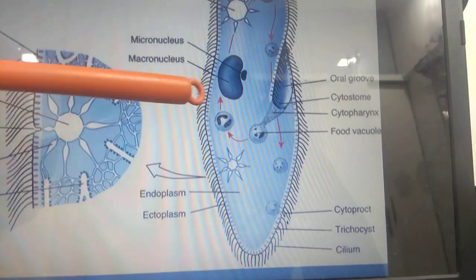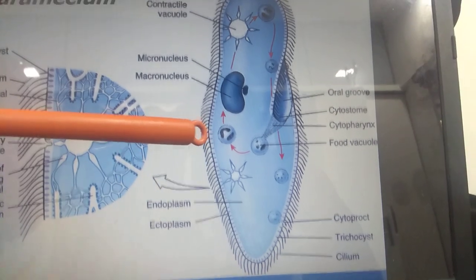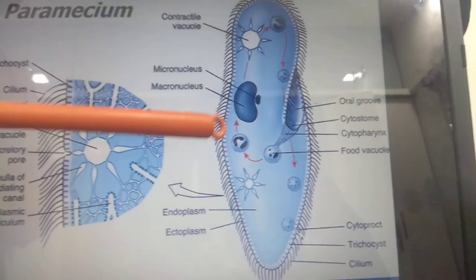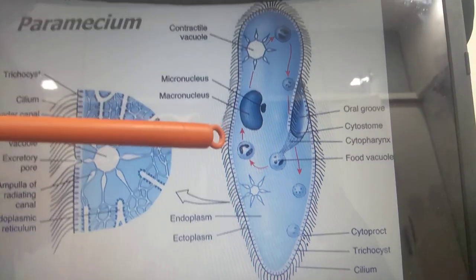The trichocyst is a carrot-like structure present in the pellicle that performs the function of protection of the paramecium.